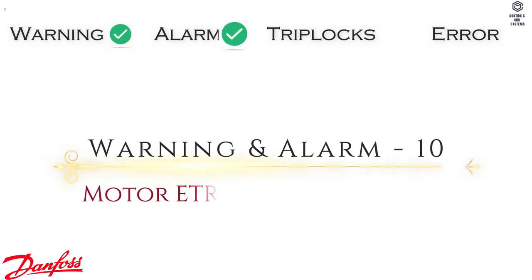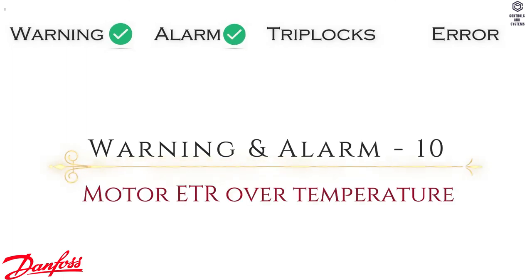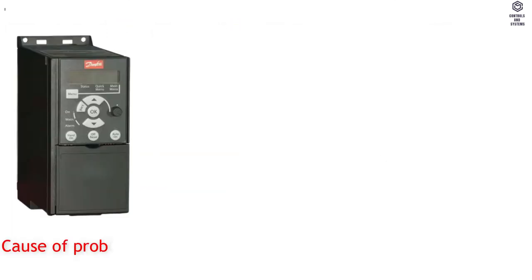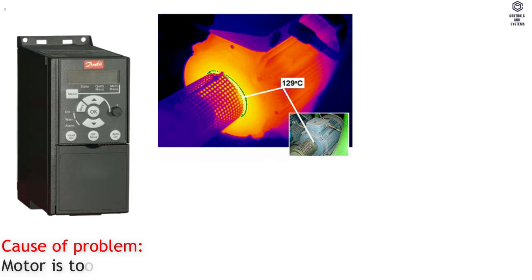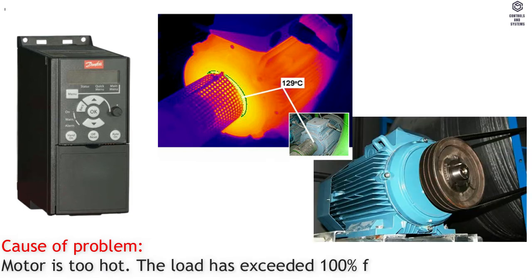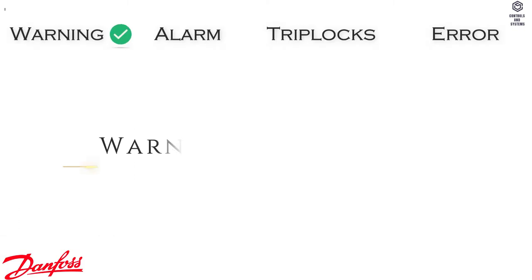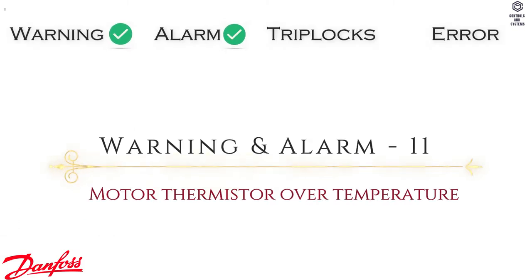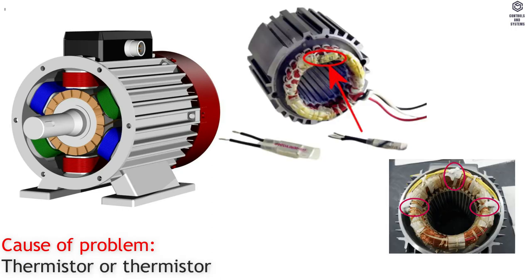Warning and Alarm 10: Motor ETR Over Temperature. Cause of Problem — motor is too hot; the load has exceeded 100% for too long. Warning and Alarm 11: Motor Thermistor Over Temperature. Cause of Problem — thermistor or thermistor connection is disconnected.